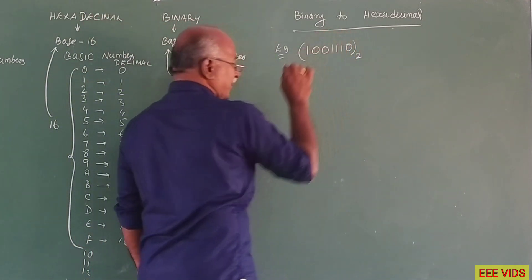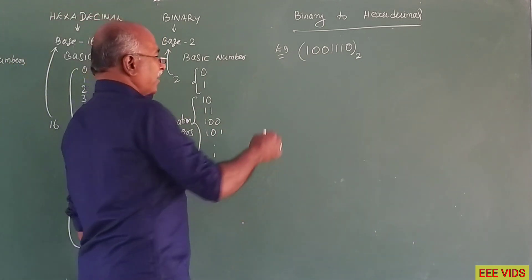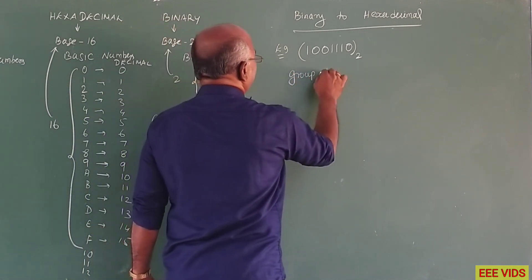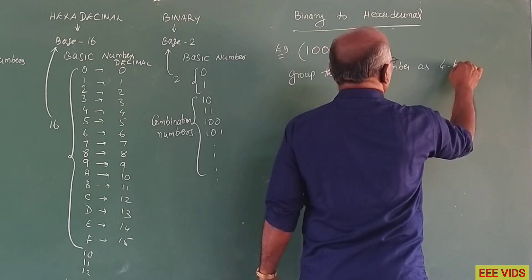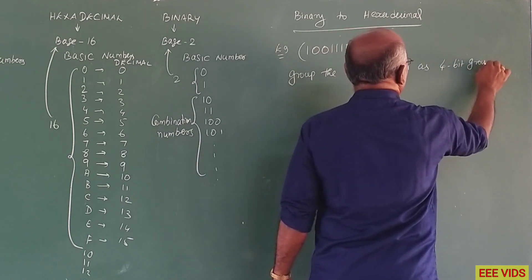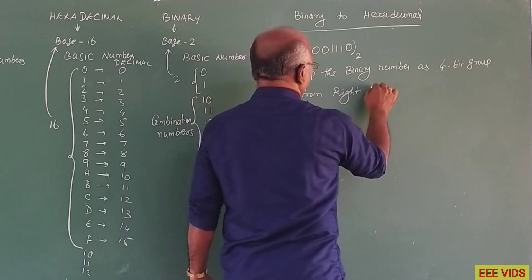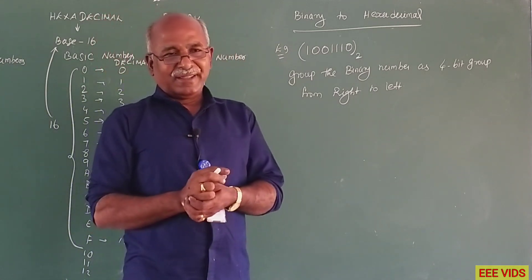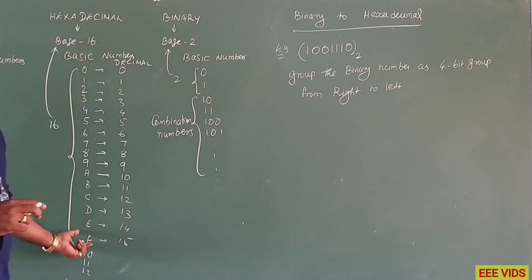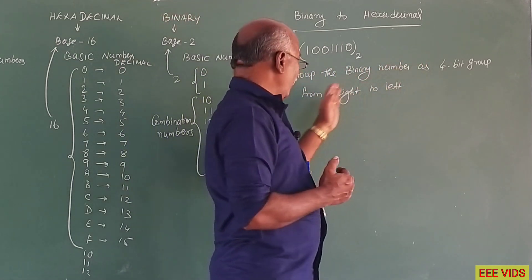Remember, it's simple. Instead of a 3-bit group, here we use a 4-bit group. Group the binary number as a 4-bit group from right to left. Right to left, split into 4-bit groups. This is the concept of hexadecimal.